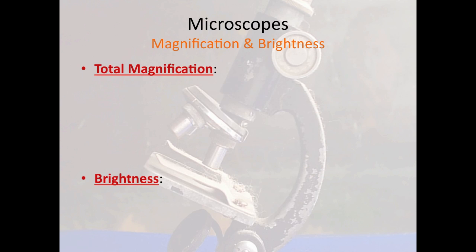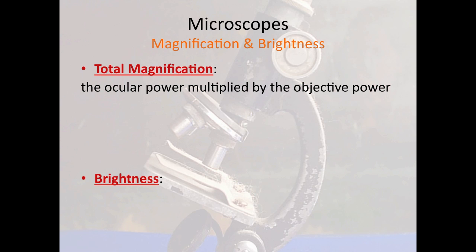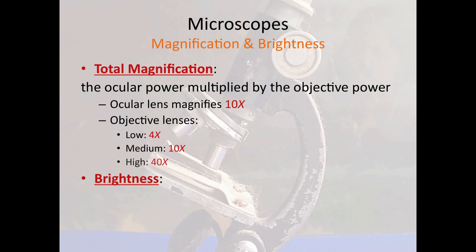There are some important skills to learn about using a microscope. Total magnification is calculated by multiplying the magnification of the ocular lens — those tubes at the top, which magnify an image by 10 power — and the three objective lenses that magnify at 4, 10, and 40 power. If you multiply 10 by 4 you get 40, and you can also get 100 or 400 power magnification depending on the objective lens you're looking through.